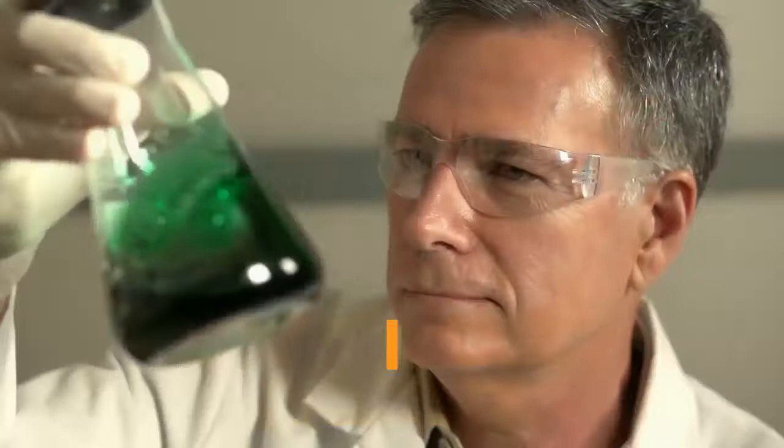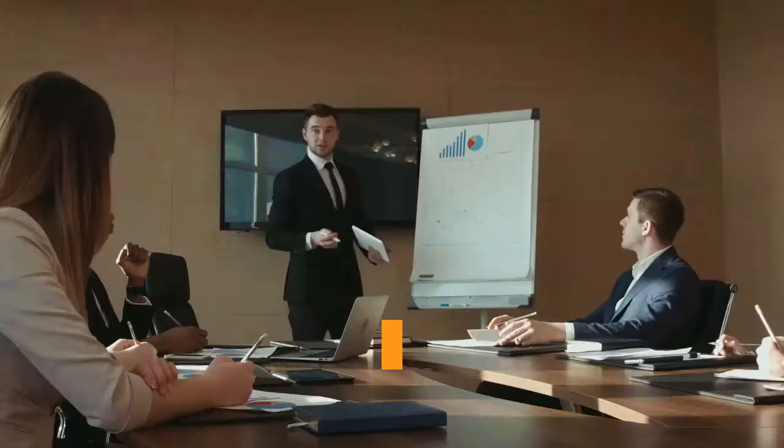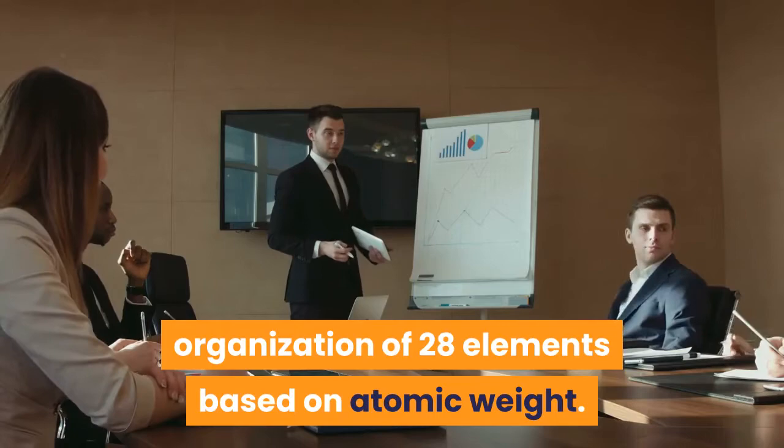Meyer published the seminal textbook Modern Chemical Theory in 1864. The book included a basic system for the organization of 28 elements based on atomic weight. This was the precursor to the modern periodic table.